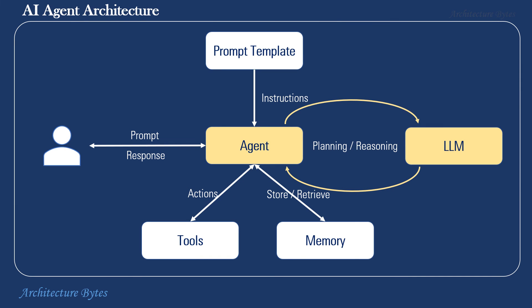Agents may invoke LLMs several times before responding to the end user. It may do this for additional planning, reasoning, or just to refine the response received from the LLM. Consider a case where the agent asks the LLM to write a short poem on happiness — the agent may then ask the LLM to reflect on the poem it generated and revise it if necessary. In other words, the orchestrator is in complete control over how the overall workflow functions.